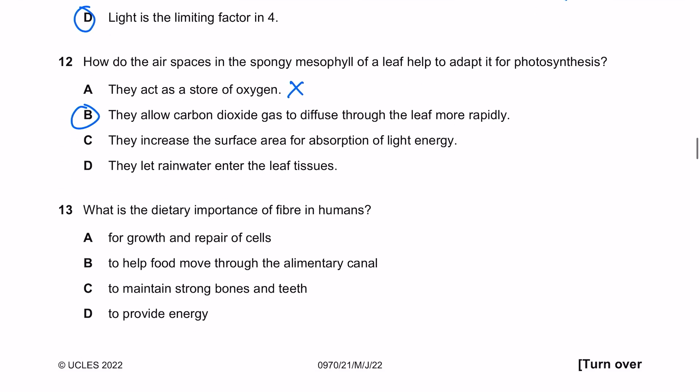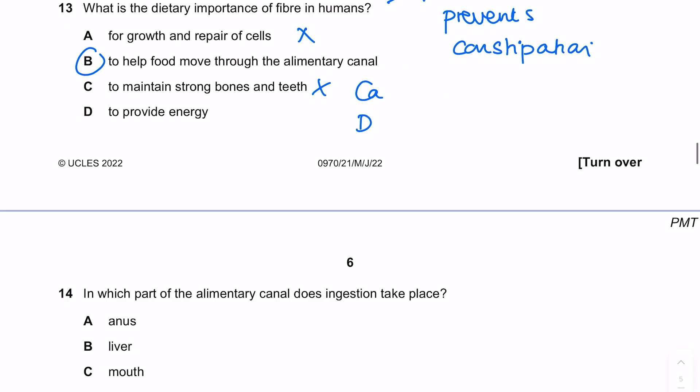What is the dietary importance of fiber in humans? It helps peristalsis which is the movement of food through the gut, therefore preventing constipation. It helps food move through the alimentary canal. It's not for growth and repair, to maintain strong bones and teeth - that's calcium or vitamin D, or to provide energy - that's fats and carbohydrates.